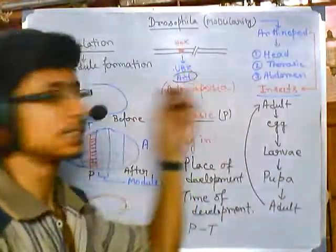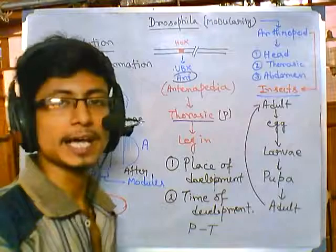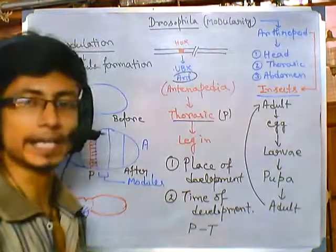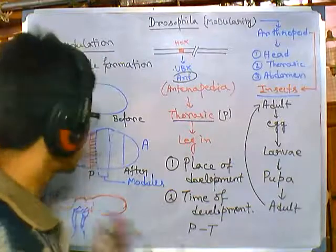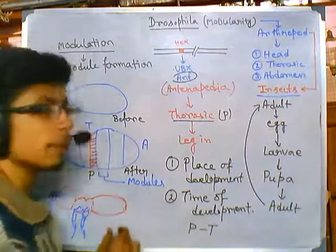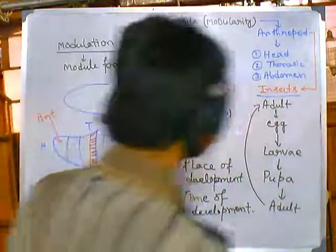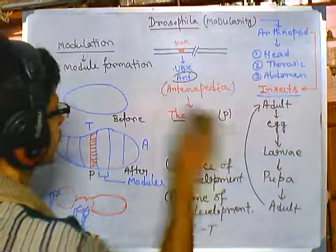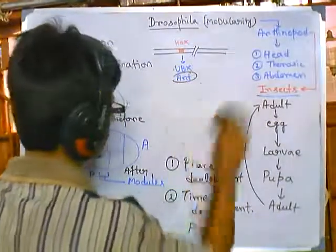This is because of the expression of the Ubx gene, which acts as a master gene regulating the activity of a gene that in turn regulates the development of legs from the body — specifically regulating the development of legs from the abdominal segment.